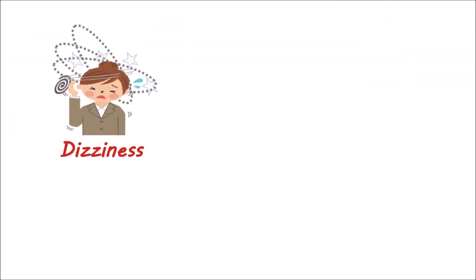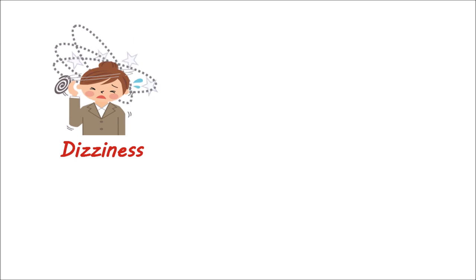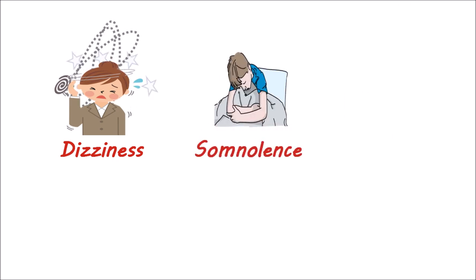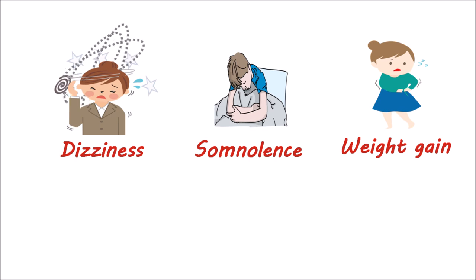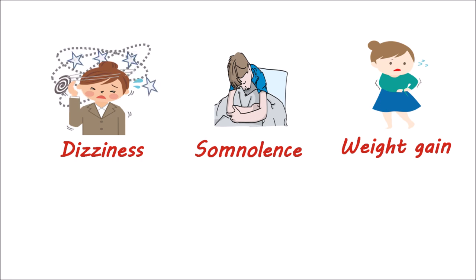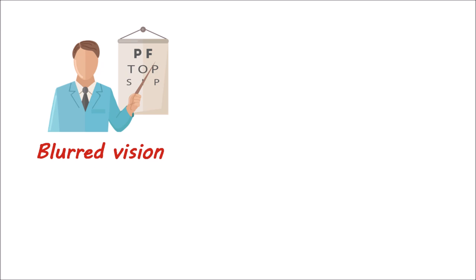Dizziness is one of the important side effects produced by pregabalin, and this dizziness may impair daytime activities. Whenever pregabalin is taken, the patient should use caution while driving a vehicle or working with machinery. This drug can also increase somnolence or sleepiness, which again impairs daytime activities. Weight gain is another important effect that can be observed with pregabalin, which is more important in patients with existing cardiovascular complications. Pregabalin can also cause some blurred vision within the first few days of treatment, but with continued administration, the blurred vision can be restored. In some patients, visual acuity may be reduced with a higher dose, and an ophthalmic examination should be done to check for any visual disturbances.